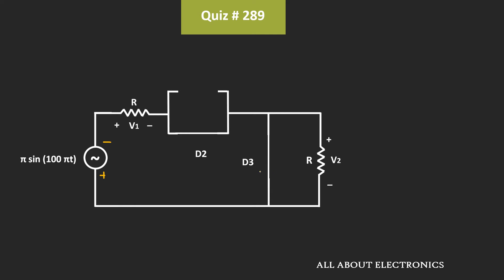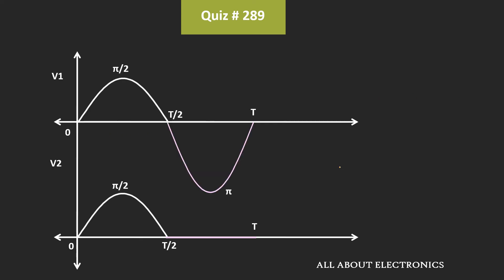Since diode D3 will act as a short circuit, the voltage across resistor R — that is voltage V2 — will be equal to zero. And in this case, the voltage V1 is equal to the input voltage, that is equal to Vm·sin(ωt). So during the negative half cycle, if we see the waveform across these two resistors, then it will look like this.